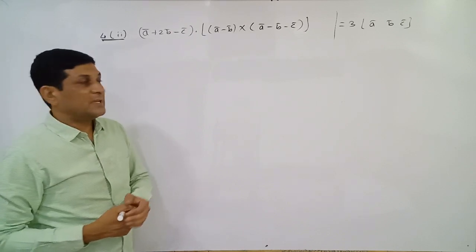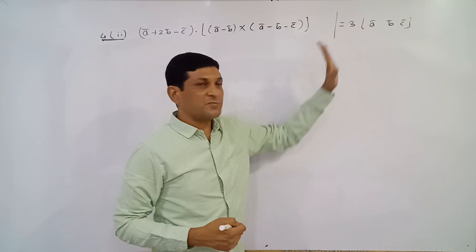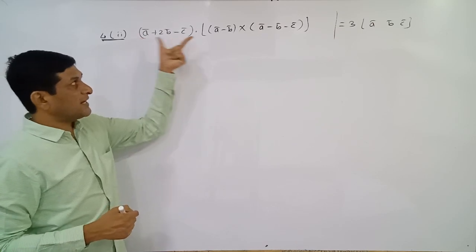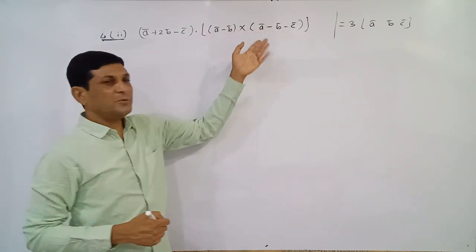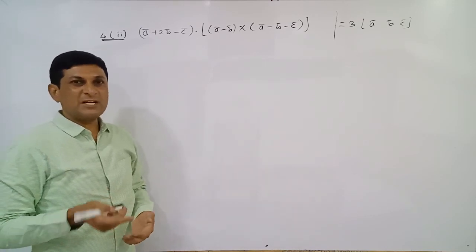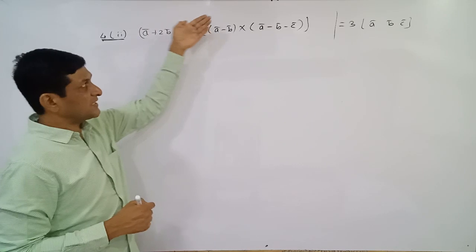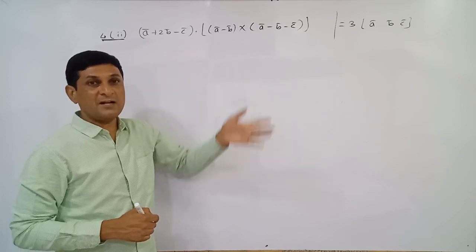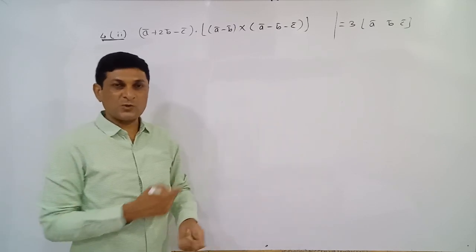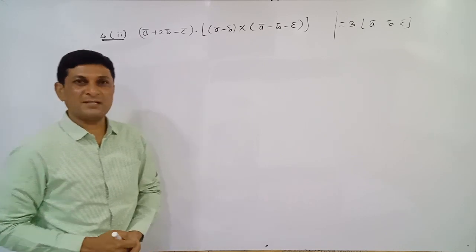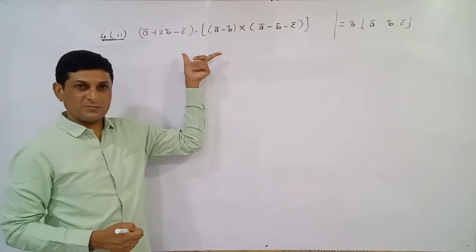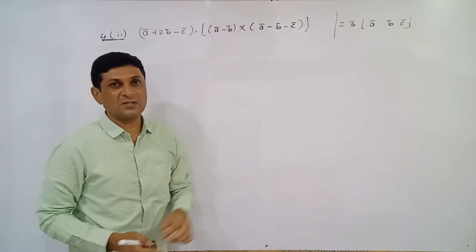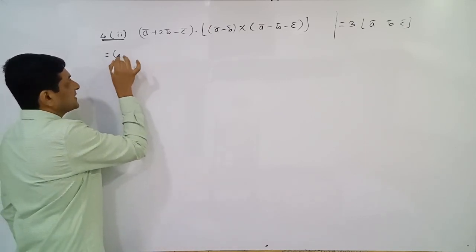In the second example, after simplifying, we have to show its value equals three times the box product [ā b̄ c̄]. Observing the expression, there are three brackets. Addition or subtraction of vectors gives a new vector. So the first bracket is the first vector, the second bracket is the second vector, and the third bracket is the third vector. We need to find the scalar triple product of these vectors.